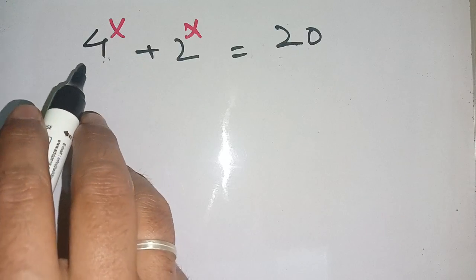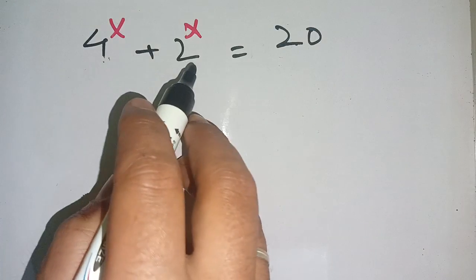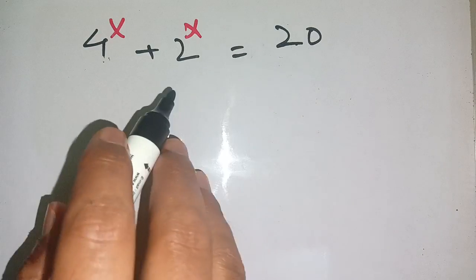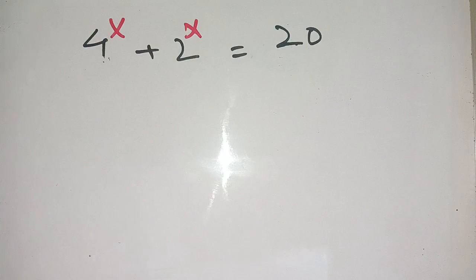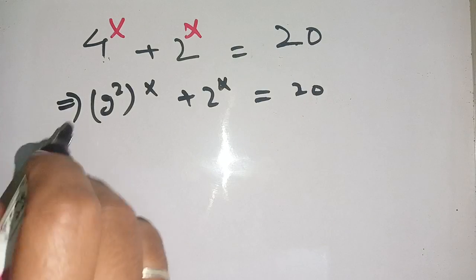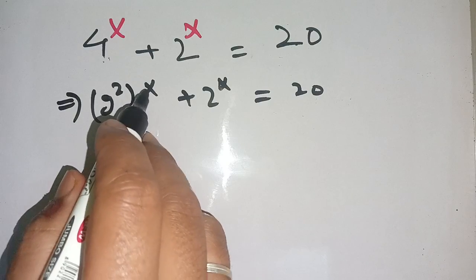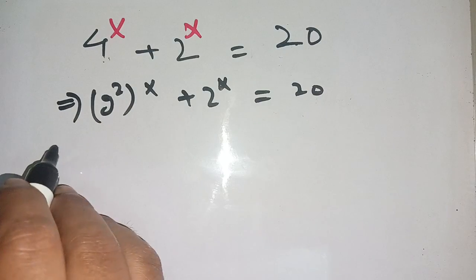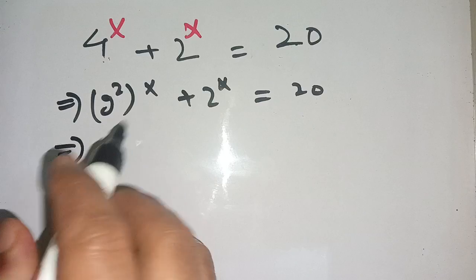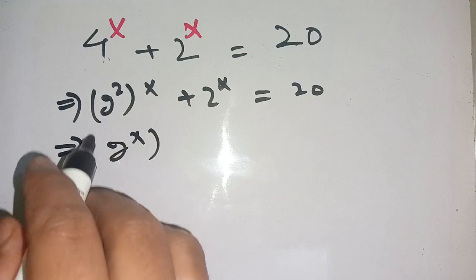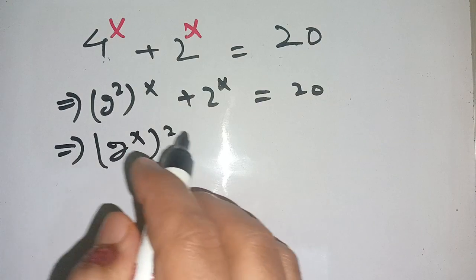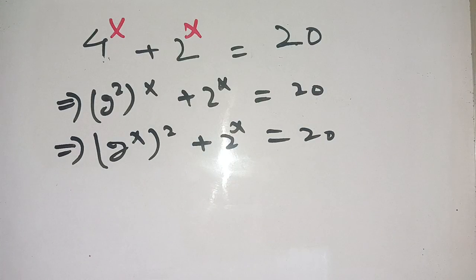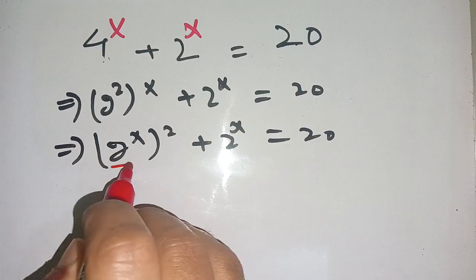Hello everyone. In today's class we are going to solve this exponential equation: 4^x + 2^x = 20. We can write this as 2² whole power x plus 2^x is equal to 20, which we rewrite as (2^x)² + 2^x = 20.